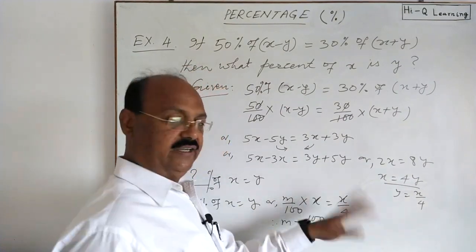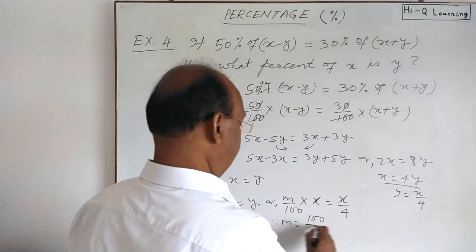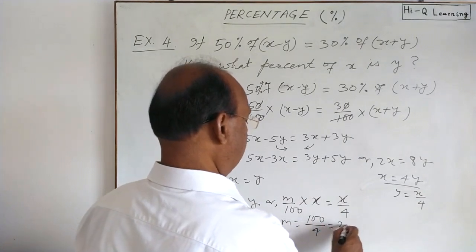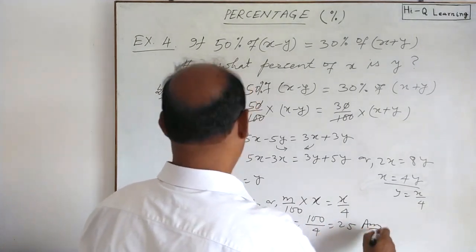100 will be transposed to right hand side divided by 4. This is equal to 25. This is the answer.